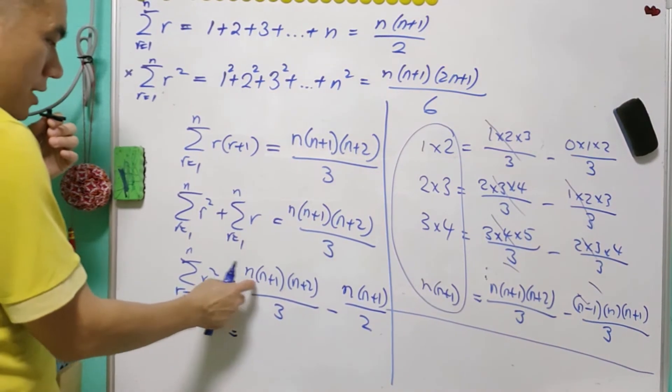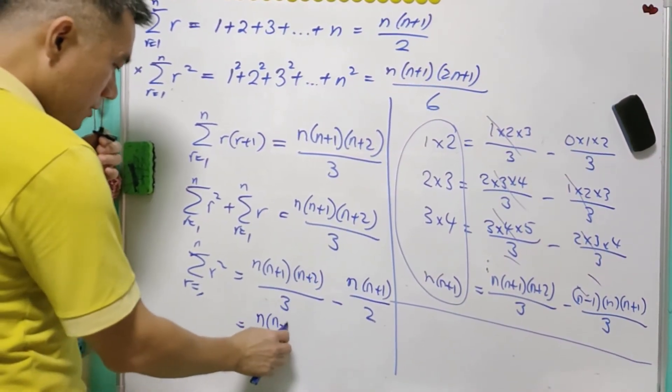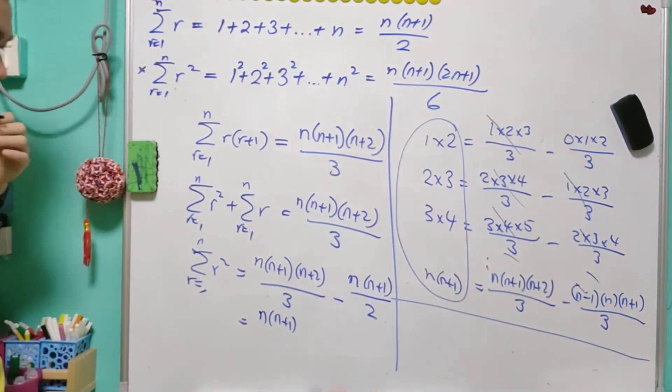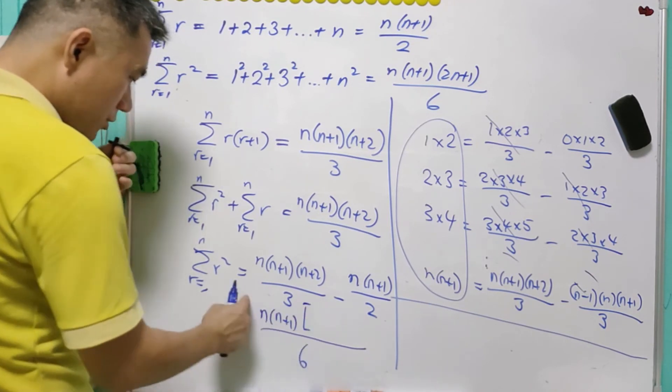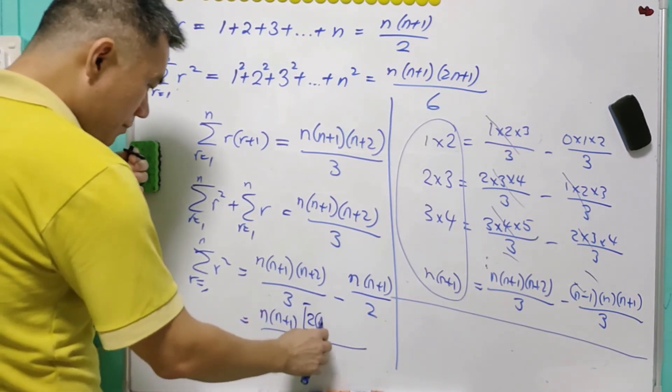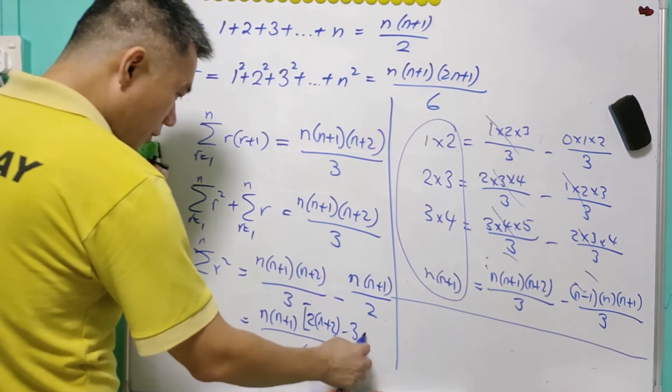So since we have n(n+1) as the common numerator, we will factorize it. And the LCM of 3 and 2 is equal to 6, so this will be your 6. So we left with 2(n+2) minus 3(1).